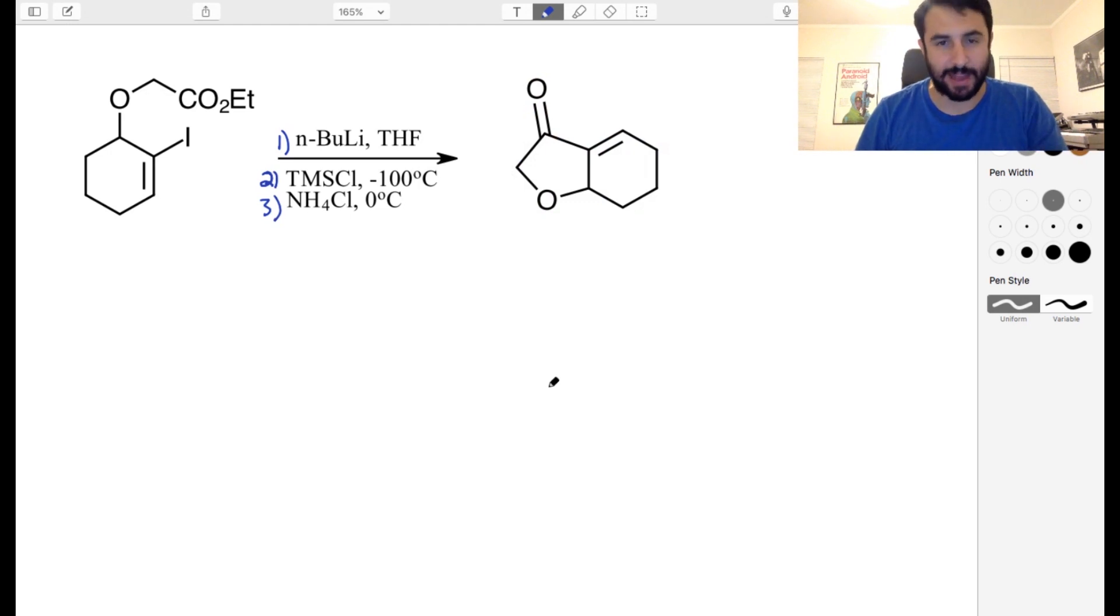Okay, today we've got another mechanism challenge. We've got some starting material, three sets of reaction conditions, and a product. So we know everything involved, but we have to show how this is going to happen mechanistically. We need all the electron pushing arrows, so take a few minutes and see if you can get this one.